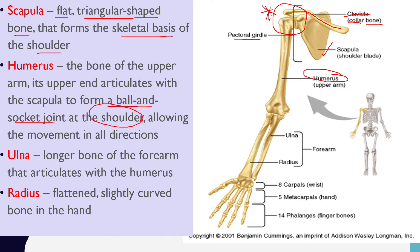The ulna and radius form the forearm. The ulna is the longer bone that articulates with the humerus. The radius is a flattened, slightly curved bone. On the hand, the thumb side corresponds to the radius.